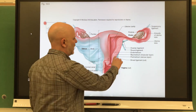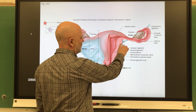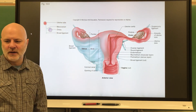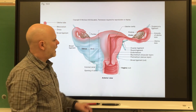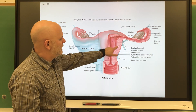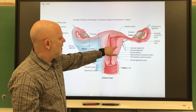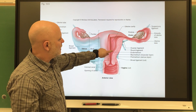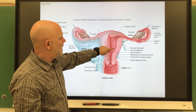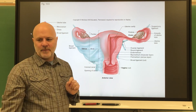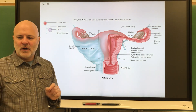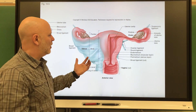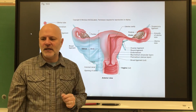Looking at the layers of the uterus: the outer serosa layer is called the parametrium, the middle muscle layer is called the myometrium, and the inner lining is the endometrium. This is where the embryo will implant.